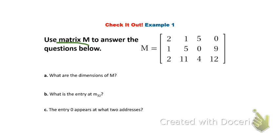The first question is what are the dimensions of M? So I'm going to first of all establish my rows. I have row one, row two, row three. So I have three rows and I have one, two, three, four. I have four columns. So the dimensions of my matrix M is a three by four.